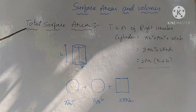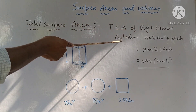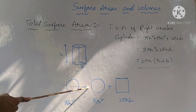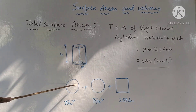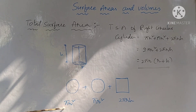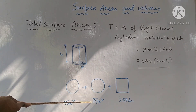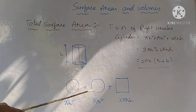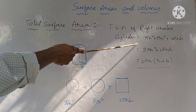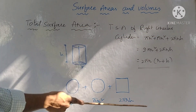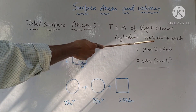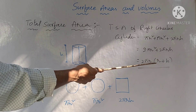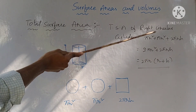Next is the total surface area (TSA) of the right circular cylinder. A right circular cylinder consists of two circles and one curved surface. The area of each circle is πr², so: TSA = πr² + πr² + 2πrh = 2πr² + 2πrh = 2πr(r + h). This is the total surface area formula.